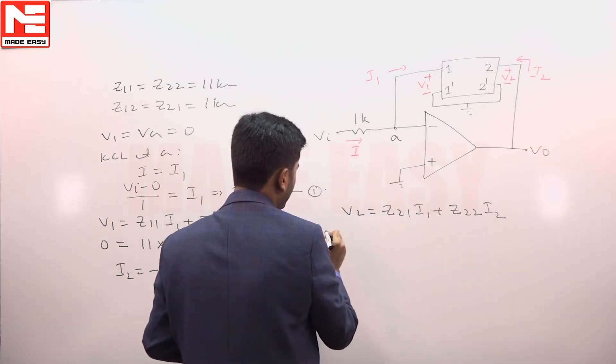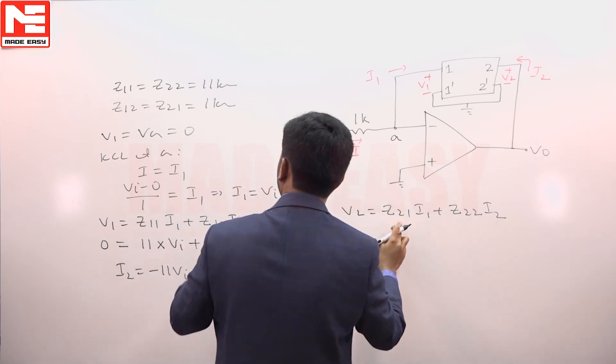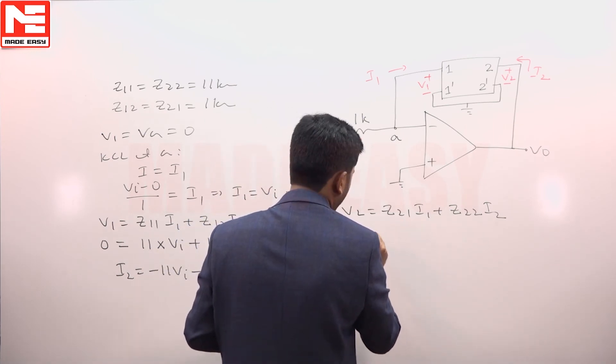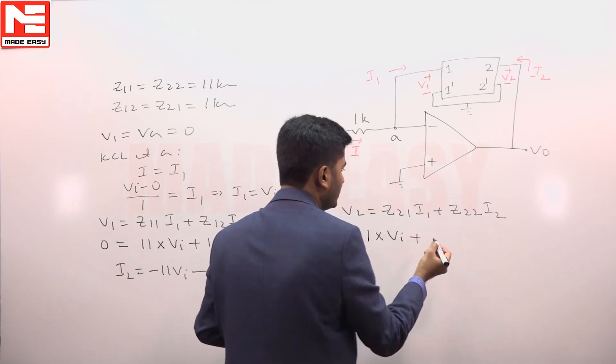V 0 is equal to z 2 1 into i1. z 2 1 is given as 1 kilo ohm into i1. i1 is V i from equation number 1, plus z 2 2, z 2 2 is 11 k.